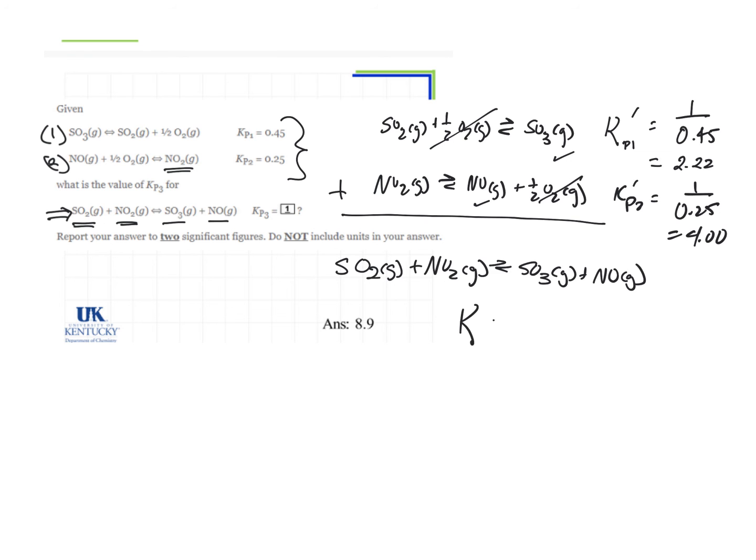So the K for this reaction is going to be 2.22 times 4, or 8.88 repeating, which is 8.9. And that's how we get the answer.